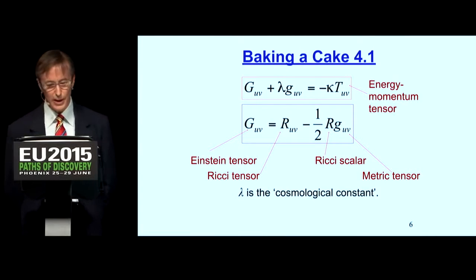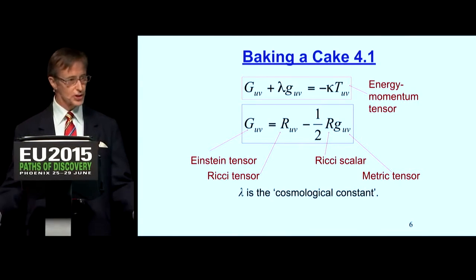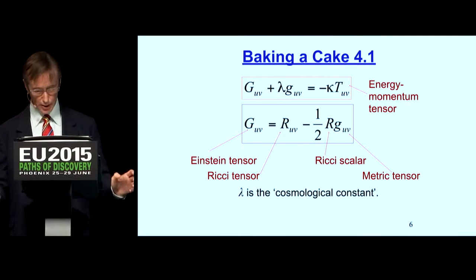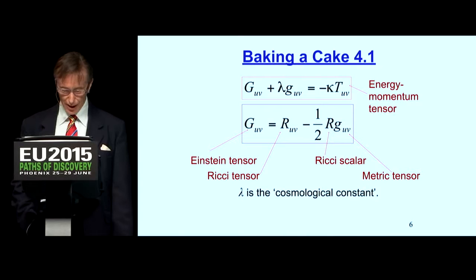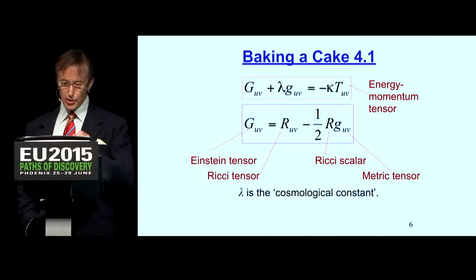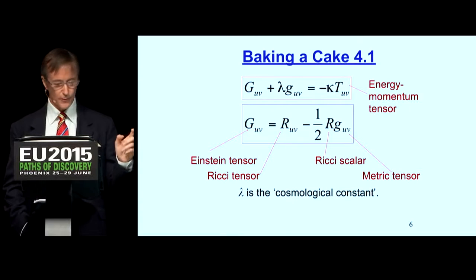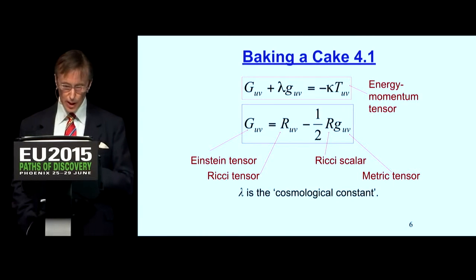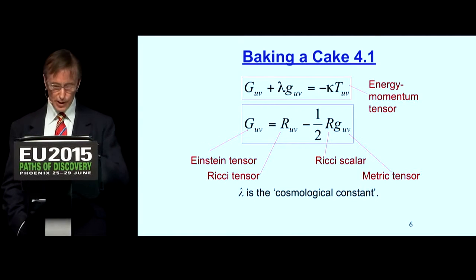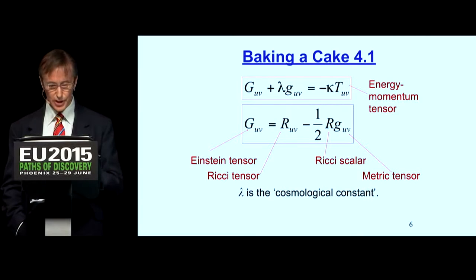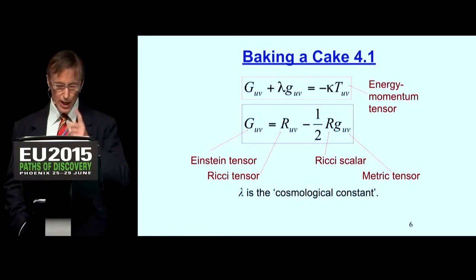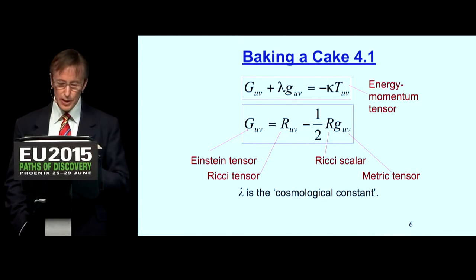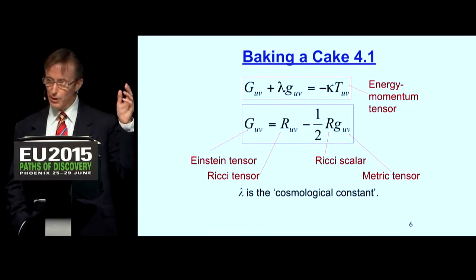Now into some mathematics. In Einstein's equations, G is the Einstein tensor; R sub UV is the Ricci tensor; R on its own is the Ricci scalar derived from it; G with subscripts is the metric tensor, sometimes called the fundamental tensor; lambda is the cosmological constant; and T is the energy-momentum tensor. The energy-momentum tensor describes all material sources of Einstein's gravitational field. G describes the geometry — matter causes spacetime to curve, producing gravity according to Einstein. The cosmological constant is essentially a fudge factor.